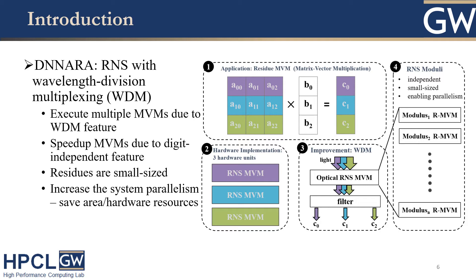How exactly do RNS and WDM features help our design? Here is a small example. We have a three-by-three matrix and a one-by-three vector. In order to perform this matrix-vector multiplication at one time, we would need three RNS-MVM hardware units. However, all of them are working on exactly the same functionality. To further improve this, why not use WDM instead? So now we can use just one optical RNS-MVM by encoding the light into different wavelengths, using this one hardware to perform three operations at the same time. As an overhead, we need a set of filters to separate the results.